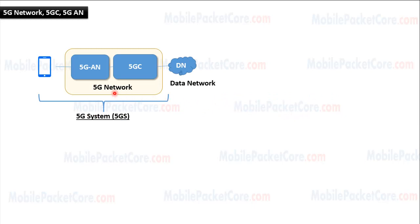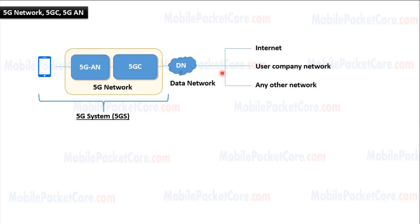The target of the 5G network is to connect between the UE and the data network. This data network could be the internet, the user company network, or any other network that the UE would like to connect to. The 5G network contains the 5G access network and the 5G core network, while the combination of the 5G network and the UE is named the 5G system, 5GS.